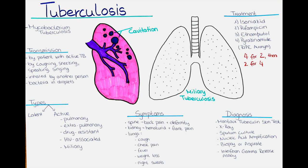In Europe, the use of the BCG vaccine has varied over time and across countries. Some European countries, such as France and Italy, have had national BCG vaccination programs since the 1950s, while other countries have never had a national vaccination program. In some countries, such as the United Kingdom, BCG vaccination was targeted at high-risk groups such as healthcare workers and individuals from areas with a high TB incidence. In recent years, there has been a shift away from routine BCG vaccination in many European countries due to low TB incidence rates, low vaccine efficacy in some populations, and concerns about the potential for false positive results on TB screening tests in vaccinated individuals.